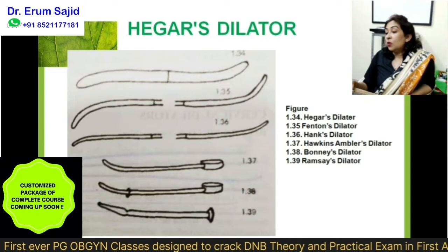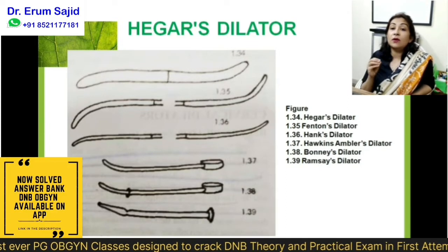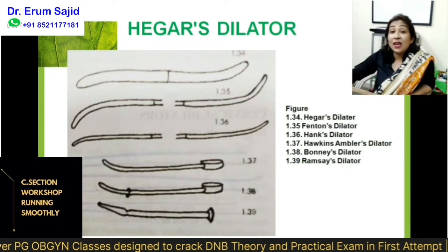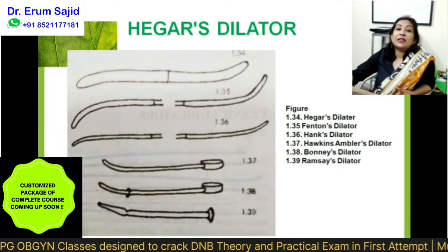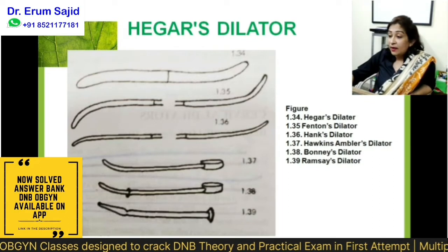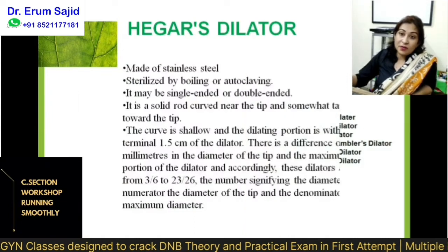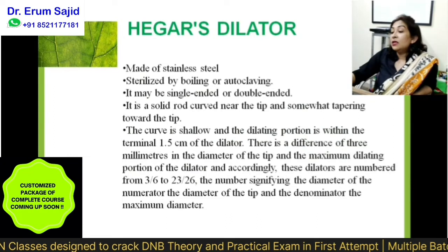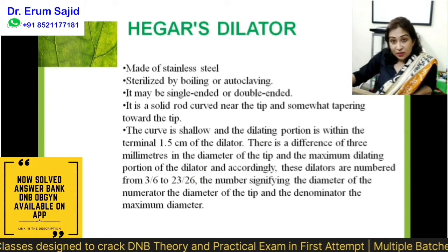There are also Ambler's, Boni's, and Ramsey's dilators — many kinds exist. You should know why they differ from Higar's dilator, as that can be asked. Anything made of stainless steel can be sterilized by boiling or autoclaving, and may be single-ended or double-ended. It is a solid rod, curved near the tip and tapering towards the tip. The curve is shallow, and the dilating portion is within the terminal 1.5 cm of the dilator.